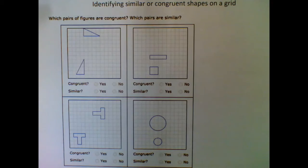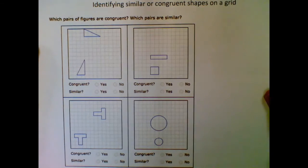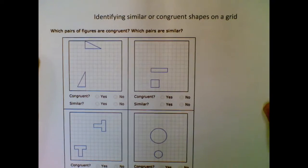Hello everybody, this is Mr. Bowman. Today we're going to be looking at the ALEKS topic, identifying similar or congruent shapes on a grid. So we're looking for each pair here. We're going to see if they're congruent and or if they are similar.